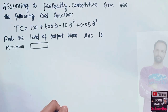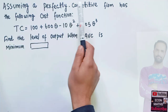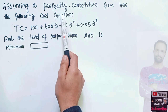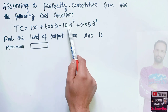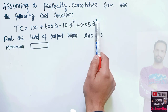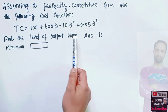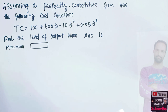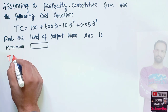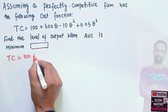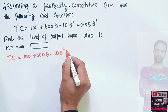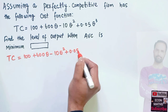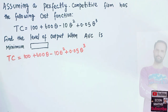The question is to find the output level where average variable cost is minimum. Assuming a perfectly competitive firm has the following cost function: total cost equals 100 plus 600q minus 10q squared plus 0.05q cubed, where q denotes the output. Find the level of output where average variable cost is minimum.